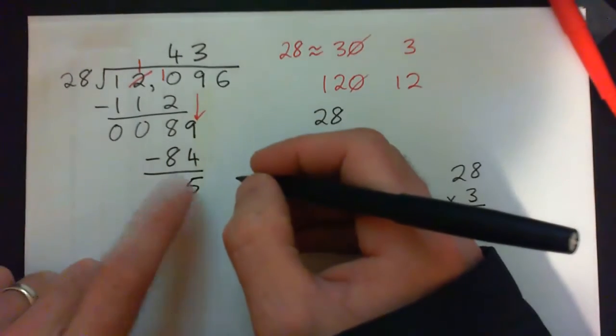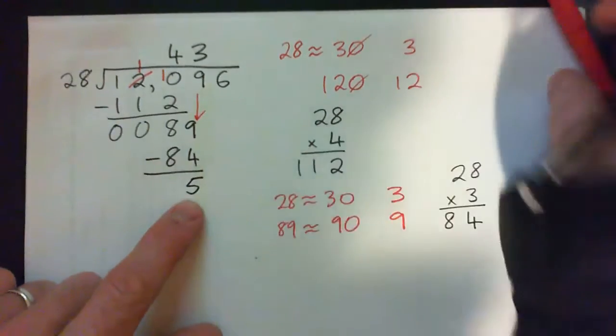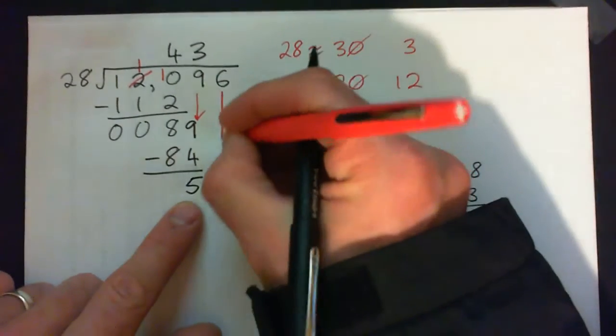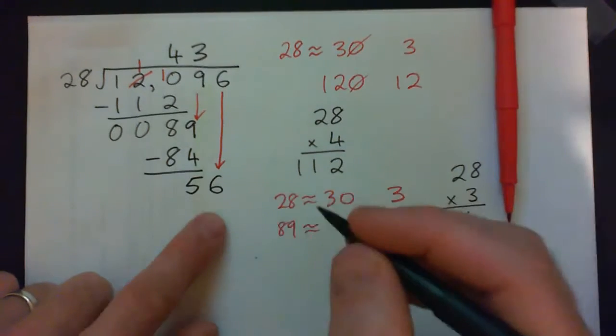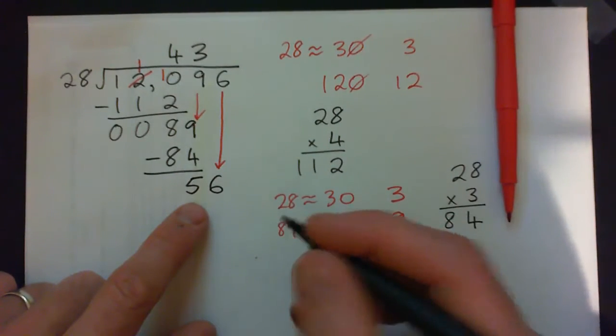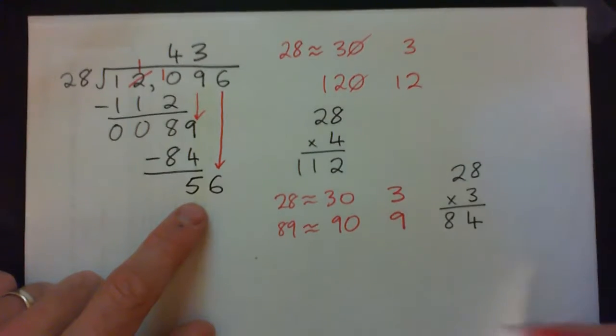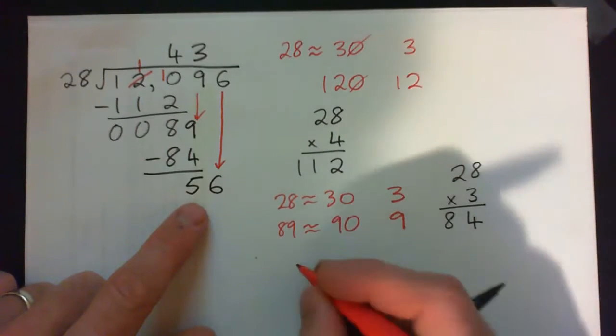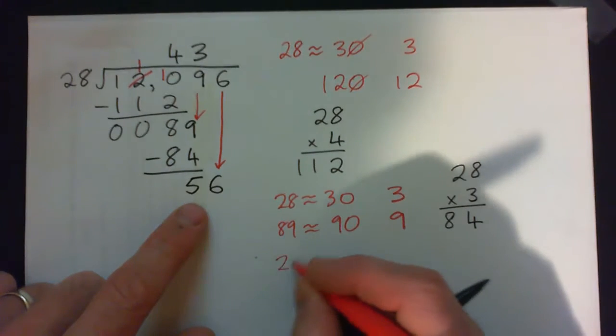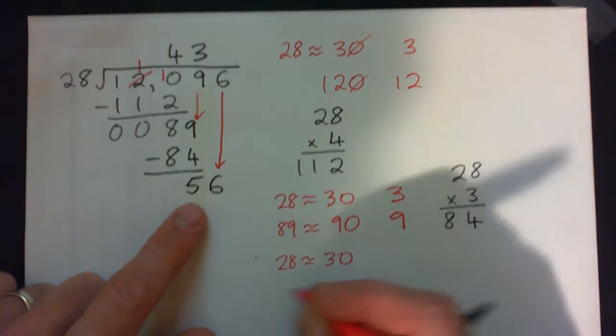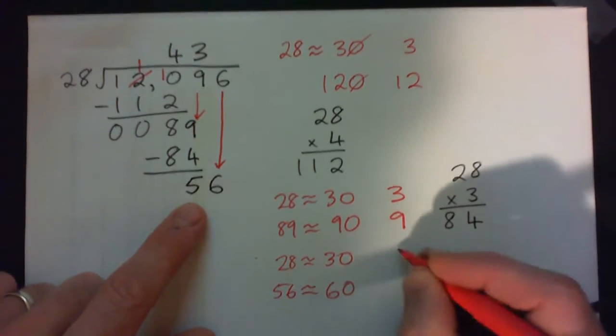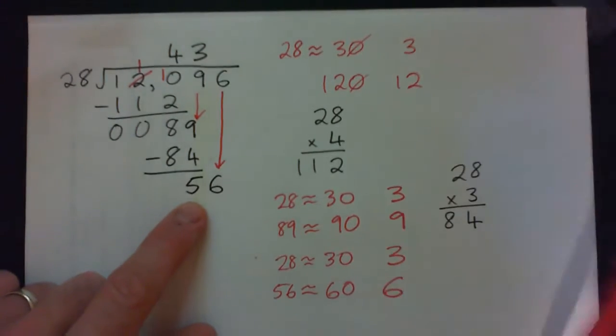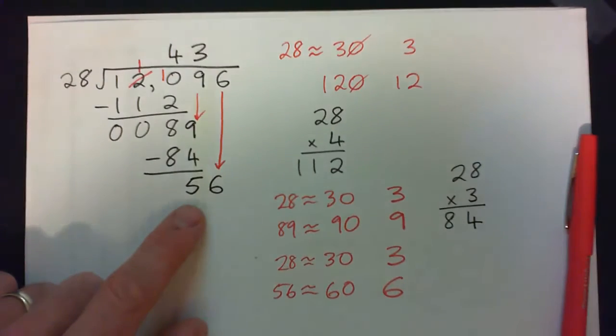28 into 5. This remainder is less than 28, so we're doing good. Bring the 6 down. Now it's 28 into 56. How many times does that go? Once again, 28 is about 30. 56 is about 60, so it's kind of like 3 into 6. 3 into 6 goes how many times?